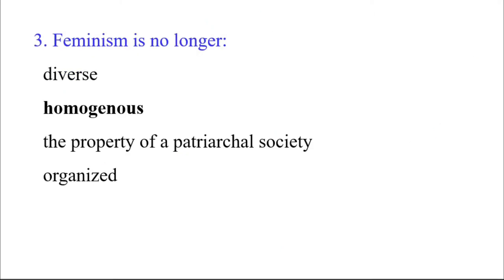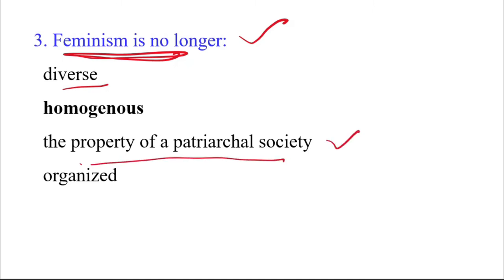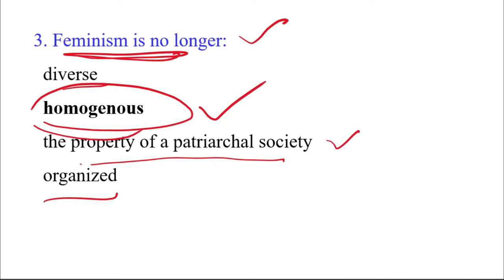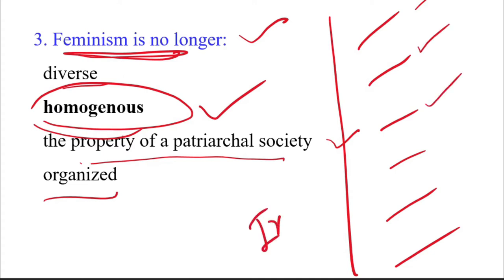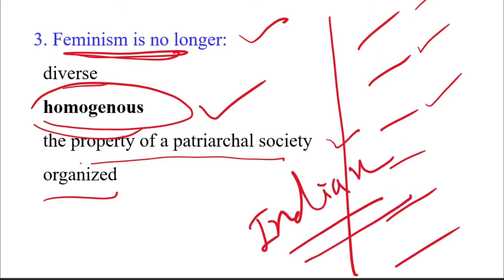The third question: feminism is no longer homogeneous. Feminism doesn't have only one branch; it has been divided into multiple branches — lesbian feminism, black feminism, British feminism, and even Indian feminism. Such a wide variety of things have been included in the host area of feminism. That is why feminism is no longer only homogeneous.